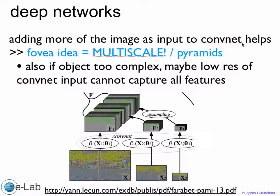It's to add more of the image as input to the convnet, which really helps the detection. Instead of adding just if you're looking at this pixel here, instead of adding just this little patch over here, you might add a larger patch at the higher resolution and so forth.